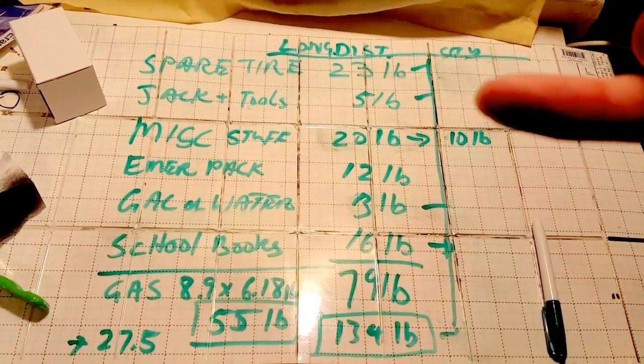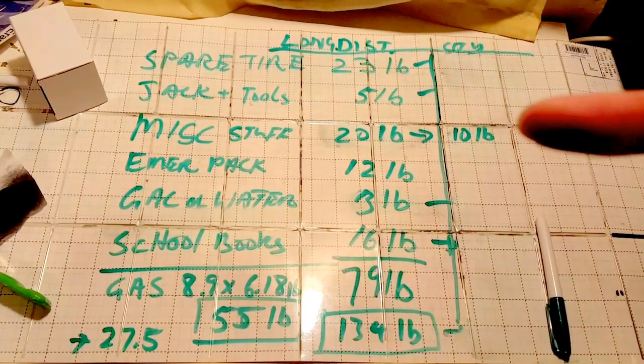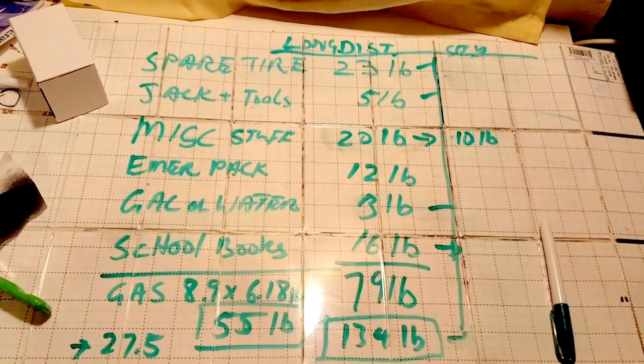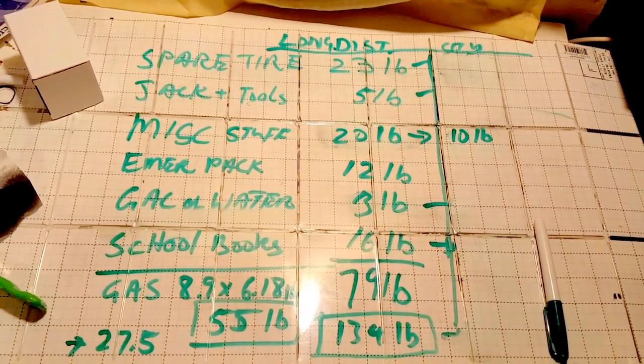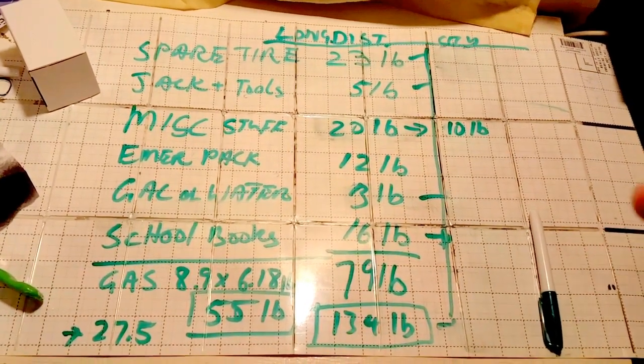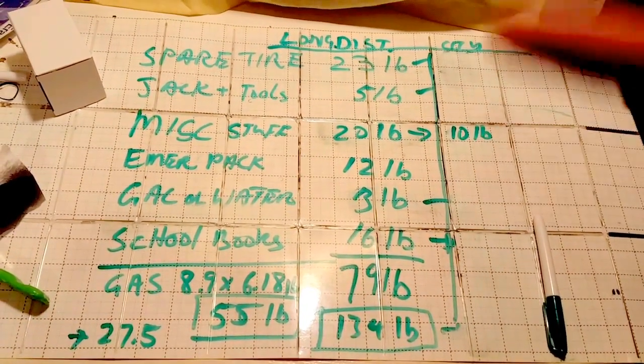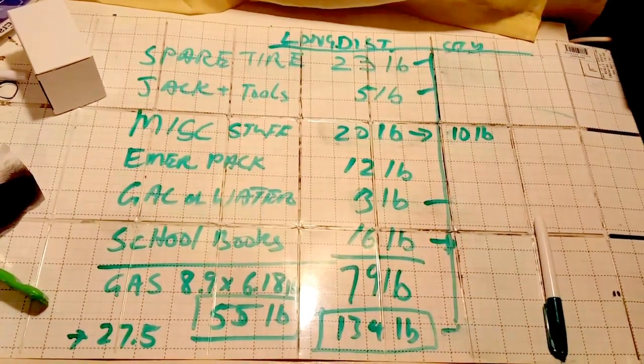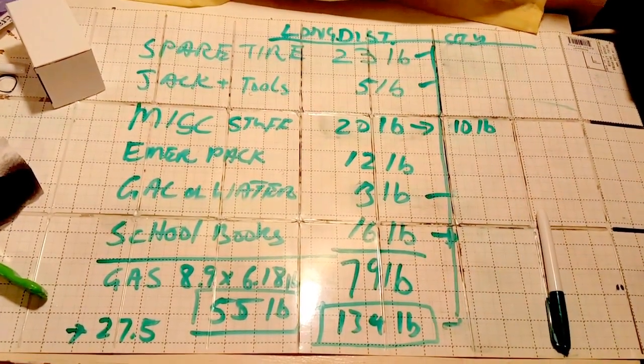The jack and tools I bought that were not included with the Chevy Volt. That's another five pounds. Miscellaneous stuff in the car, like the rear detector and other things that were just lying around, like charger packs and other things. The emergency pack, which is my little bug-out bag in case I get stuck somewhere in the zombie apocalypse, that's about 12 pounds. A gallon of water was another three pounds.